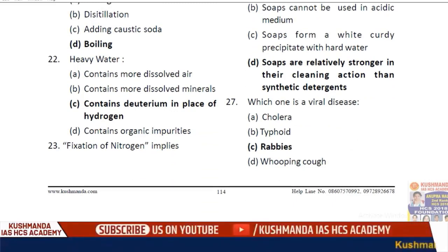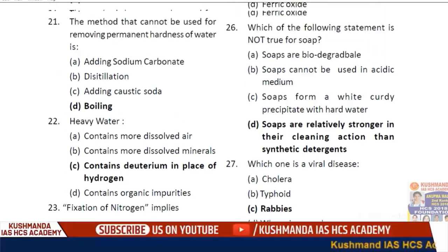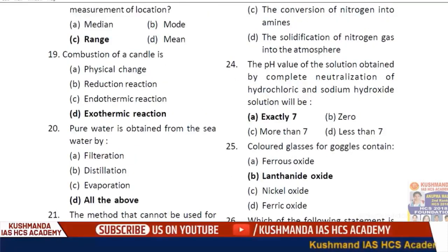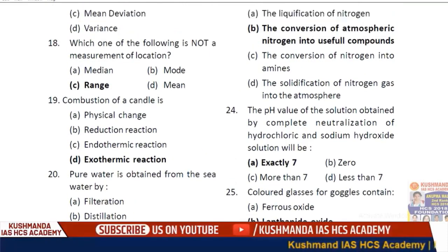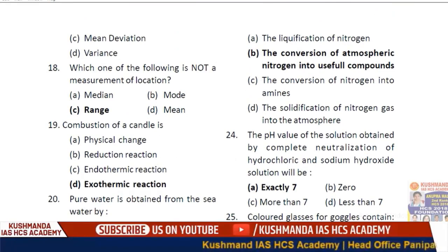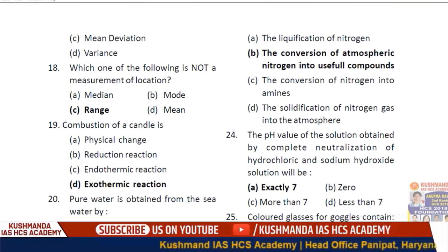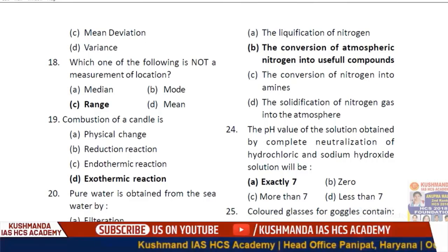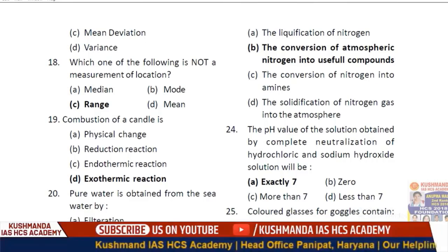Question 23: Fixation of nitrogen implies — option B is the correct answer — the conversion of atmospheric nitrogen into useful compounds.